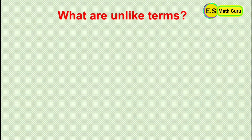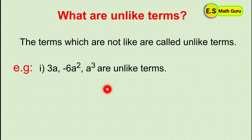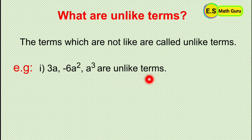What are unlike terms? The terms which are not like are called unlike terms. For example, 3a, minus 6a squared, and a cubed are unlike terms because these terms do not have the same powers.